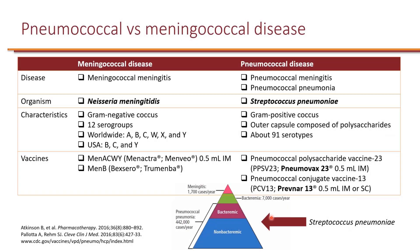Before we talk about pneumococcal vaccine, it's important to distinguish between pneumococcal disease and meningococcal disease. When we say meningococcal disease, we are talking about meningococcal meningitis specifically, and this is caused by the organism Neisseria meningitidis, which is a gram-negative coccus.